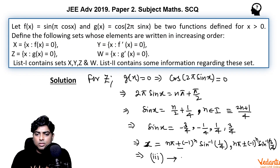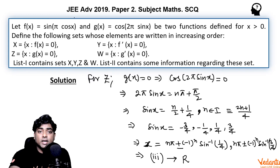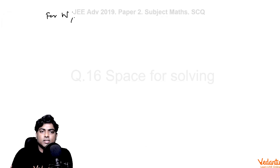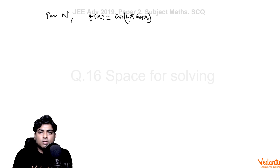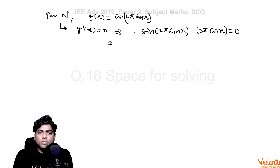Now for set W, we solve g'(x) = 0. Since g(x) = cos(2π sin x), by the chain rule g'(x) = -sin(2π sin x) · 2π cos x = 0. This means either sin(2π sin x) = 0 or cos x = 0.